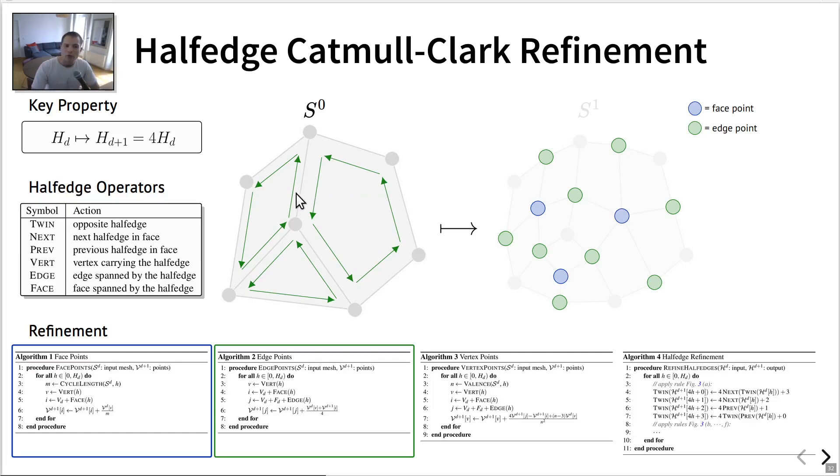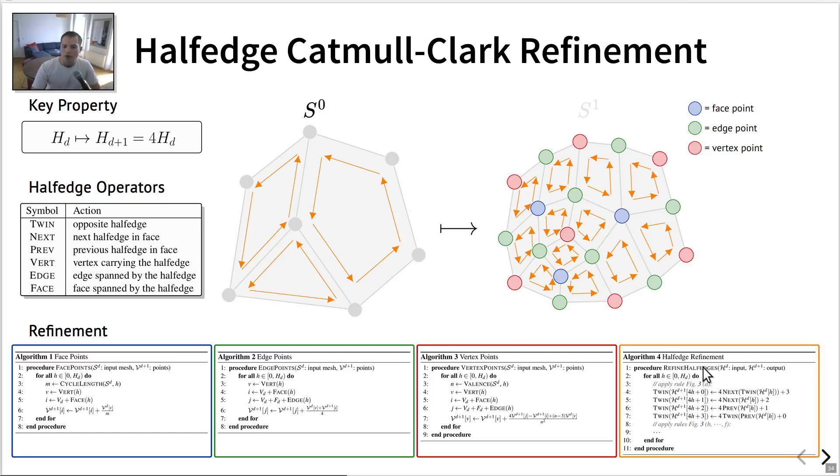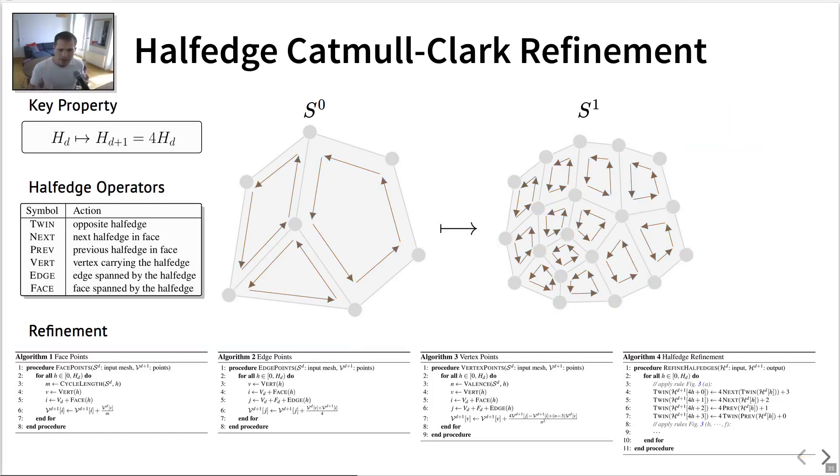Similarly, we have an edge step that creates a vertex point for each edge of the input mesh. And here again, each half-edge contributes to the edge it spans. A vertex point that creates a vertex point for each of those of the input mesh. So here, each half-edge contributes to exactly one vertex point, and it's the one whose vertex is carried by the half-edge. So for instance, this vertex point here is computed using this half-edge that departs from it, this one, and this one. And finally, the topology step that computes a one-to-four mapping of the half-edges to assemble these newly created vertex points into quads. And with these four algorithms at hand, we are able to evaluate the refinement step entirely.